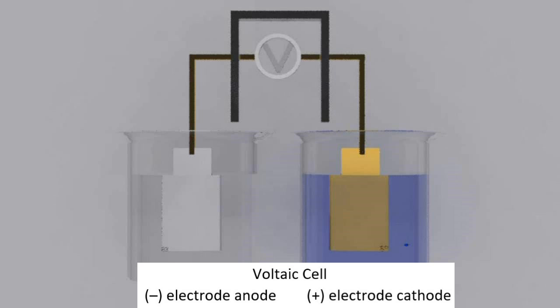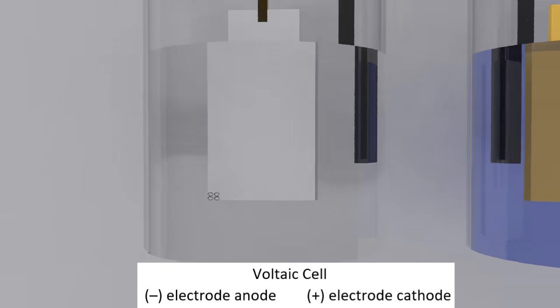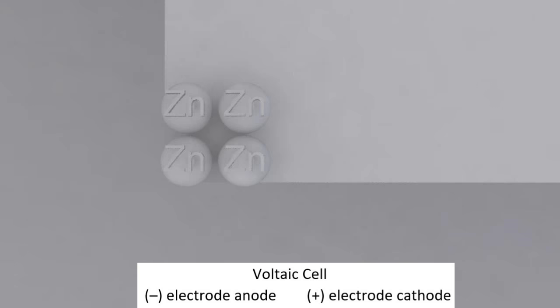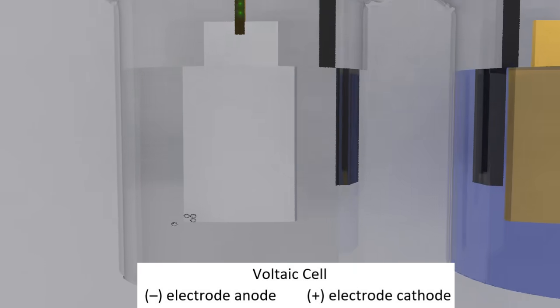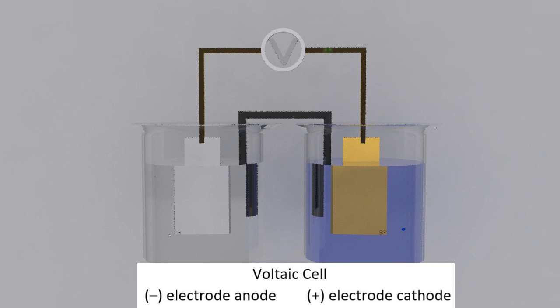Let me just put in the salt bridge to complete the circuit and balance the charge. Now you can see that the electrons are leaving from this electrode here. The zinc turns to zinc two plus, so this must be the anode, and the electrons are going towards the cathode.